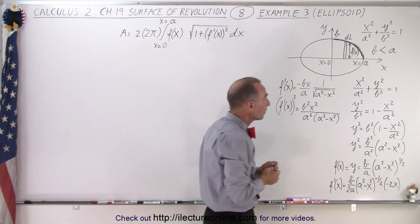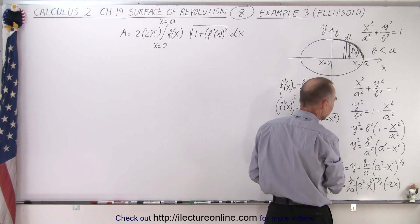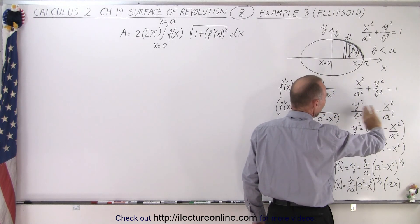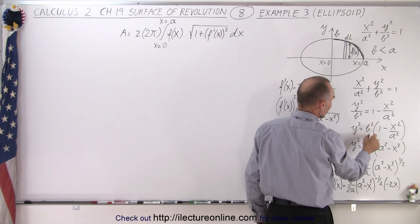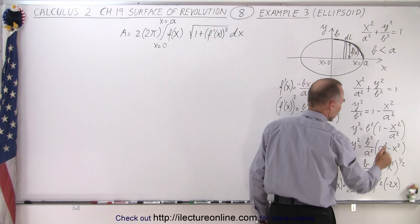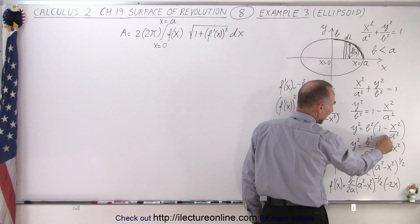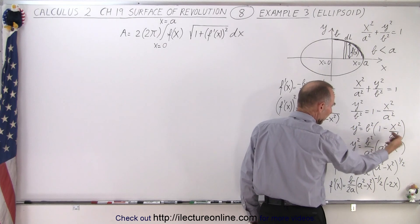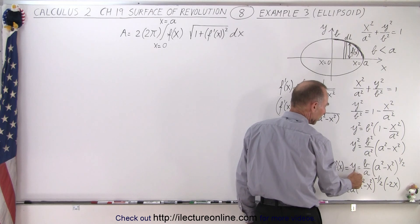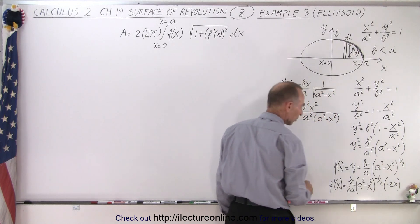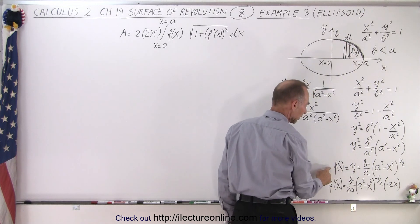First we need to take the ellipse equation and turn it into a function of x, f(x). We isolate y on one side and x on the other. Moving b squared up, we get y squared equals b squared times (1 minus x squared over a squared). Getting a common denominator of a squared gives us (a squared minus x squared) in the numerator, and taking the square root yields f(x) = (b/a) times the square root of (a squared minus x squared). That is the function we need for the radius of the ellipsoid.